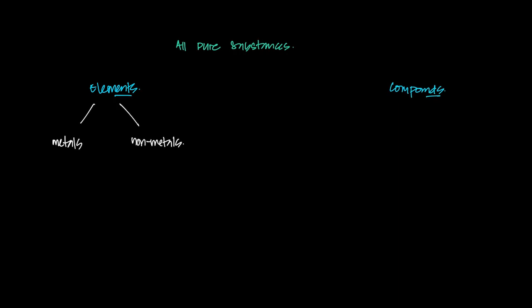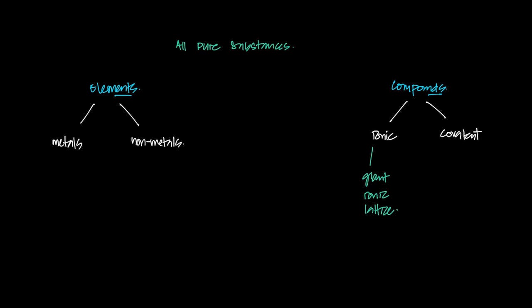Compounds can be divided into either ionic or covalent. If you're an ionic compound, there's only one structure: a giant ionic lattice. Ionic bonding is only found in compounds, not in elements. If you're covalent, you can have two different structures: a simple structure or a giant structure, also known as macromolecular.